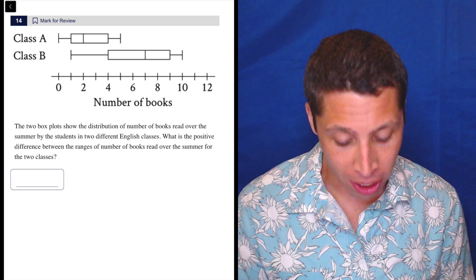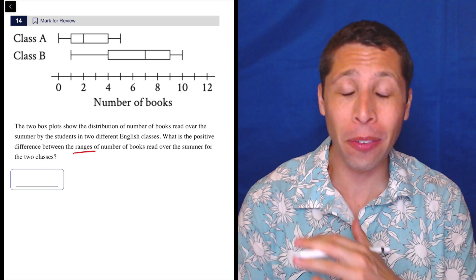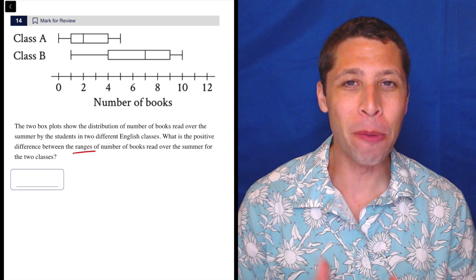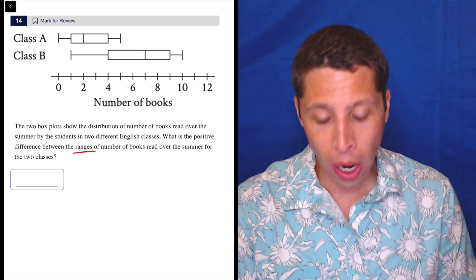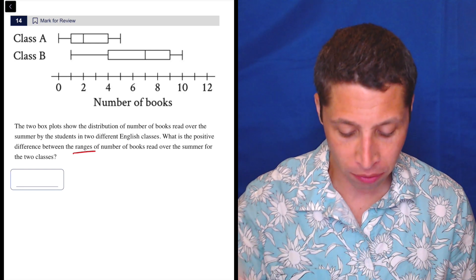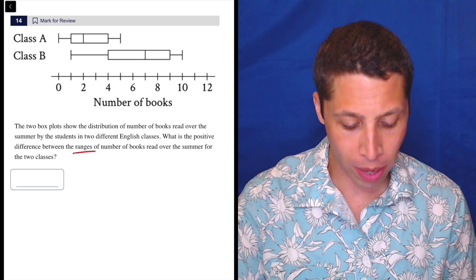In fact, when they ask about the range, that is probably one of the easiest things to understand. Even if you've never seen a box plot before, you might be able to just intuitively get this by kind of taking your best guess. So I will review all the parts, but for the purposes of just answering this question, what is the positive difference between the ranges of the number of books read over the summer for the two classes?